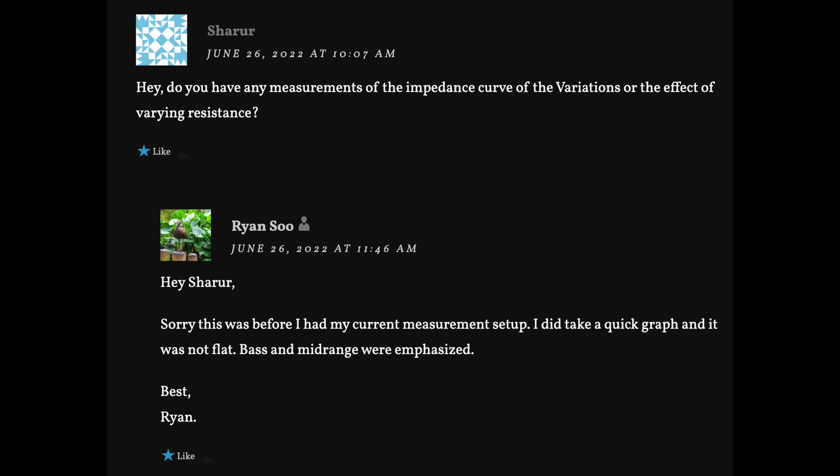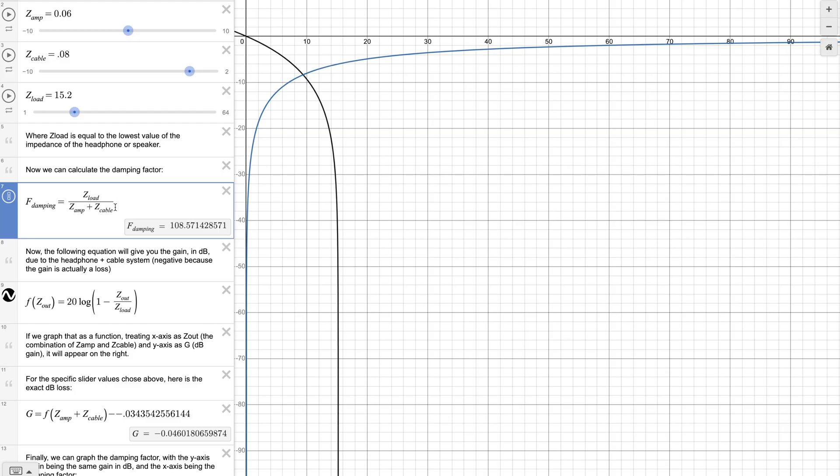I don't have the curve for you, but using a higher impedance source with the Variations should result in more bass and more mids, or technically, less of everything else.